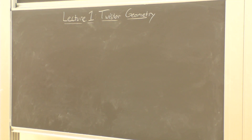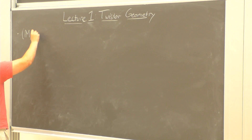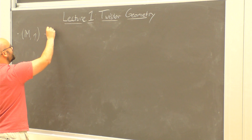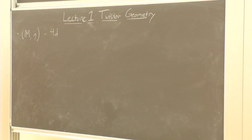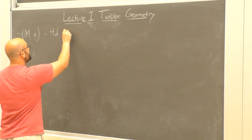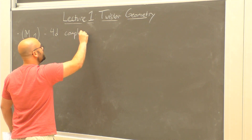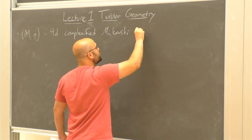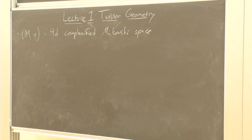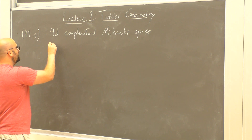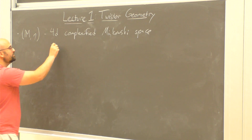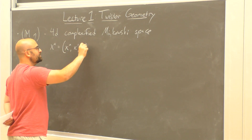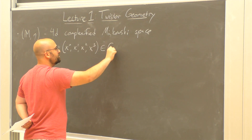Let's start out by just setting the scene. For the purposes of everything I'm going to tell you guys, we're going to be living in a four-dimensional Minkowski space — not just a Lorentzian real Minkowski space, but what we call complexified Minkowski space. What I mean by this is that I think of this manifold as having four holomorphic coordinates x^A, which are x^0, x^1, x^2, x^3. These are allowed to be complex.